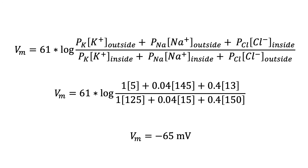It is possible to calculate the membrane potential of a cell if the concentrations and relative permeabilities of the ions are known. Recall from the last lesson, the Nernst equation is used to calculate one ion's equilibrium potential. Knowing the equilibrium potential can help you predict which way one ion will move, and it also calculates the membrane potential value that the cell would reach if the membrane were only permeable to that one ion.